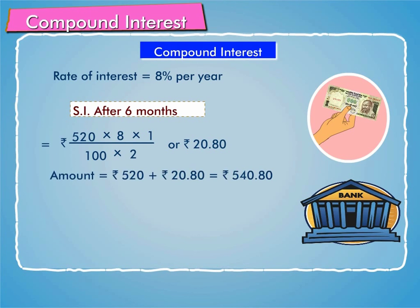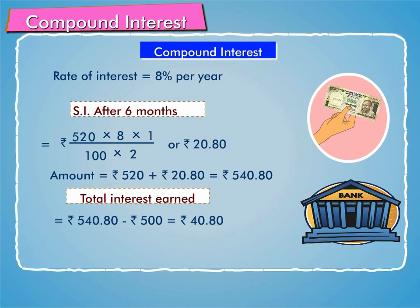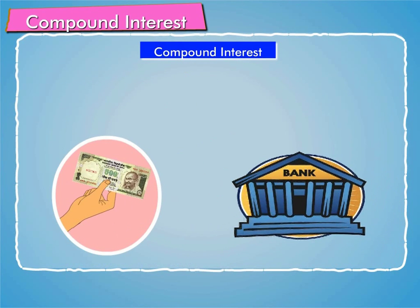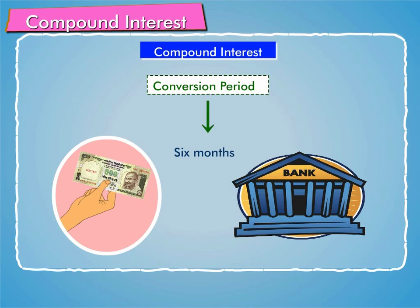Thus, the amount of Rs. 500 will be Rs. 540.80. The difference between the amount and the principal, i.e., Rs. 40.80, will be compound interest on Rs. 500 at 8% per annum for 1 year. The period after which the interest is credited is called conversion period. In this case, the conversion period is 6 months.